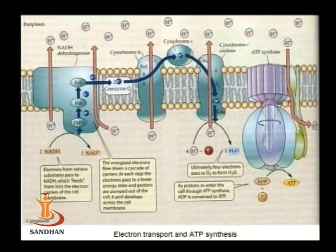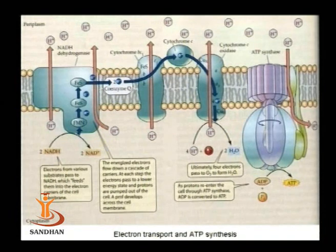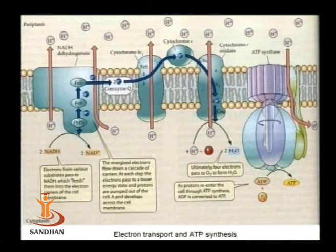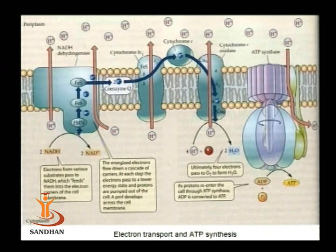Reduced coenzyme Q donates electrons to Complex III, which is the BC1 complex. It carries two types of B cytochromes (one of lower potential and one of higher potential) and C1. Finally, via cytochrome C, electrons are accepted by Complex IV, which carries A-type cytochromes — cytochrome A and cytochrome A3. Finally, molecular oxygen serves as electron acceptor.